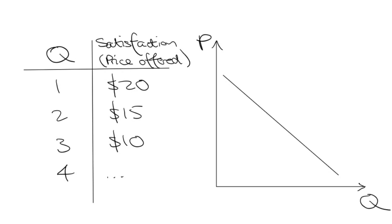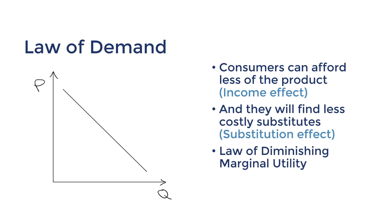In economics, utility means satisfaction from consumption, and marginal means for every extra unit. The concept states that for every extra unit that you consume, the satisfaction derived from the product and the price offered for it will fall. This contributes to the negative correlation between quantity and price in the demand curve. Again, this is an extension concept, so just focus on the first two reasons for the law of demand.